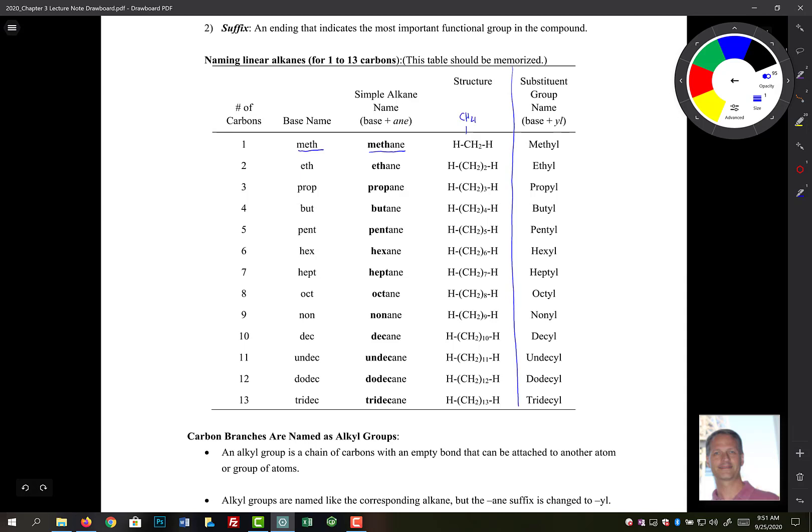So if you have two, then it's called eth. Three is prop, four is but, five is pent, six is hex, we have hept, oct, non, dec, undecane, dodecane, tridecane, up to 13.